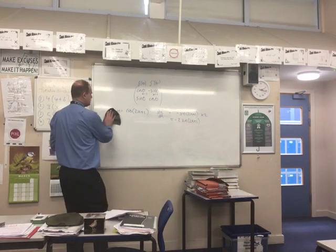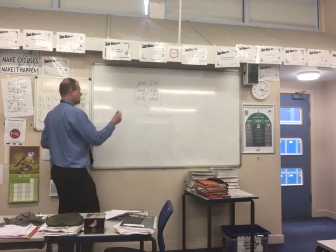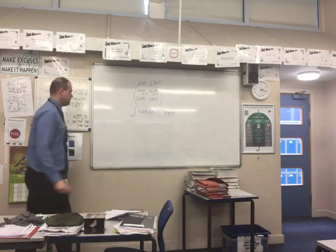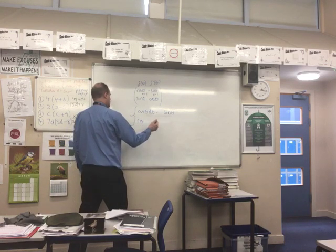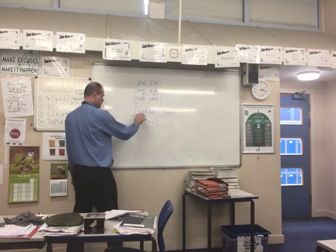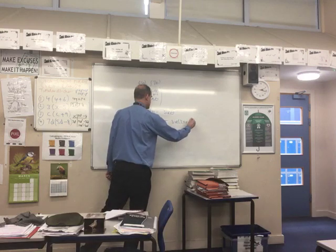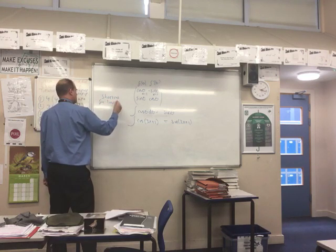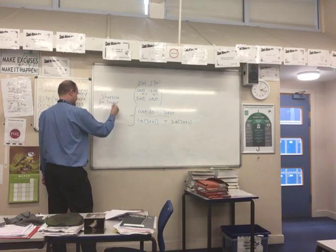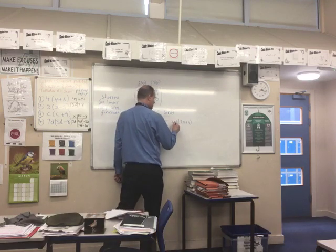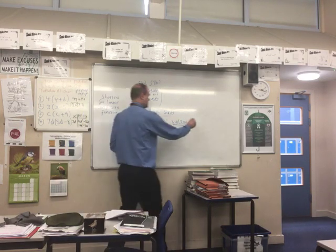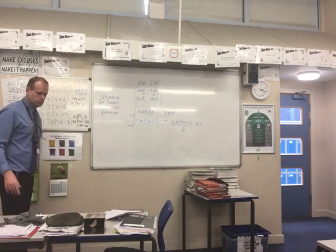Applying the integration shortcut: ∫cos(3x+1)dx — cos integrates to sine, giving sin(3x+1), then divide by 3, so the answer is sin(3x+1)/3 + c. This linear composite function trick saves a lot of time as a shortcut to the chain rule.